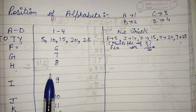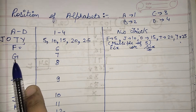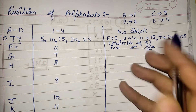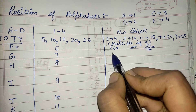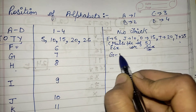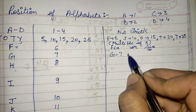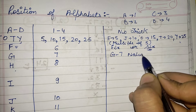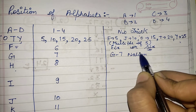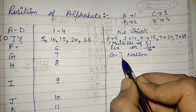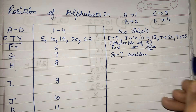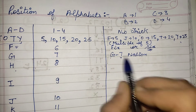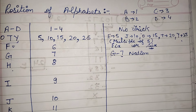Coming to G — you know that there are G7 nations, so you can simply remember with this trick that G is present at the seventh position in the alphabets.